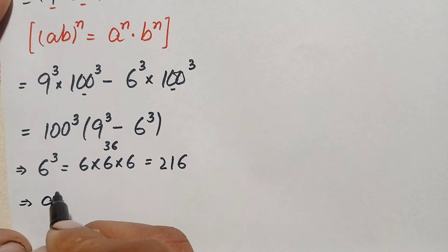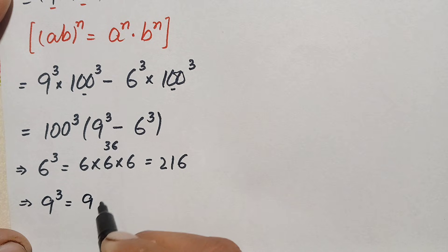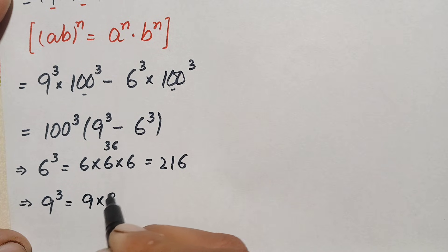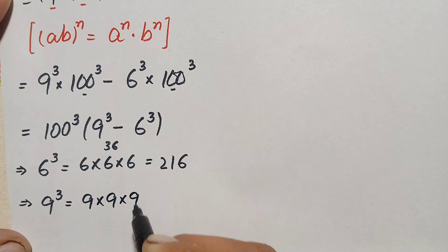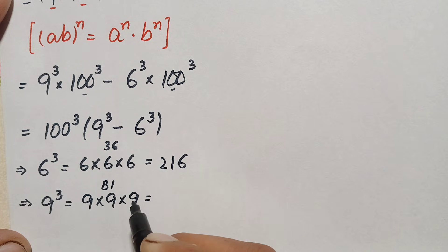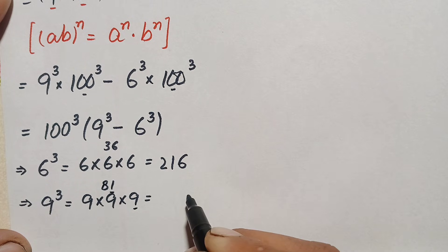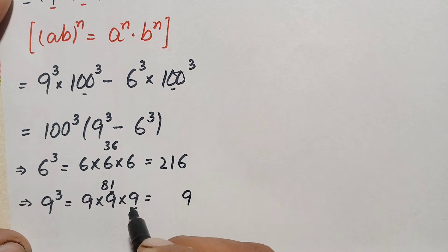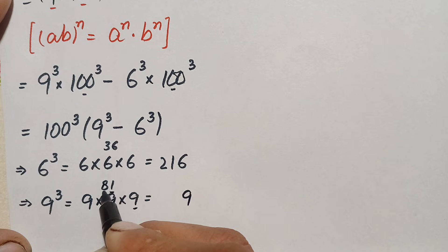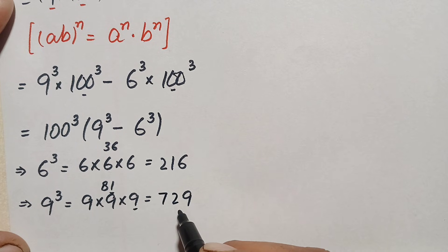Next we find 9 cubed. We write 9 cubed as 9 times 9 times 9. Now 9 times 9 is 81, and 81 times 9: 9 times 1 is 9, and 9 times 8 is 72. So 9 cubed equals 729.